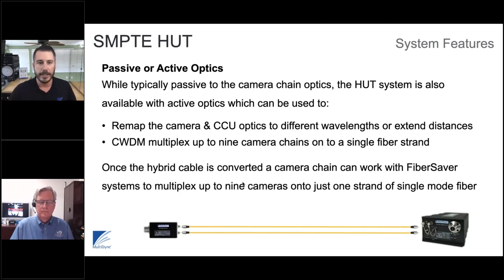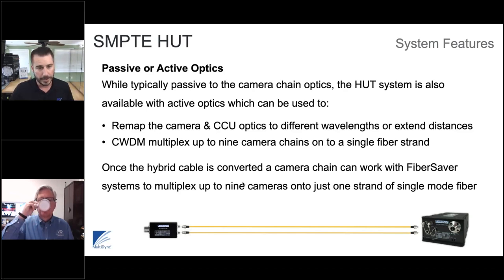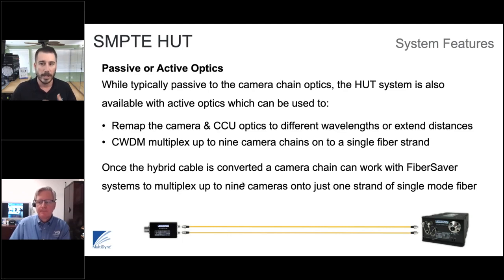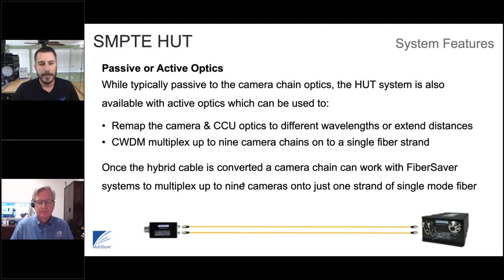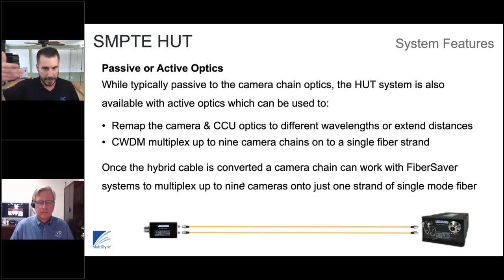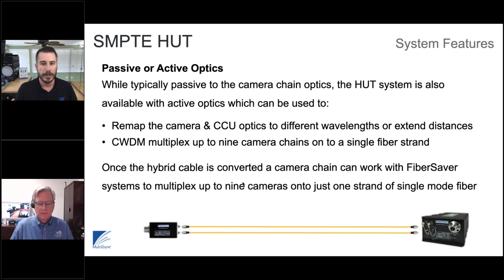We have the ability to put active optics in this system. Once you do that, you're actually relaunching the optical signal — remapping it to different wavelengths or boosting it by regenerating it. Once you remap the optical signal, you could be outputting in unique CWDM wavelengths, up to 18 unique wavelengths that we can then multiplex. In this scenario that gets you to nine camera chains, because there are two wavelengths per camera chain.